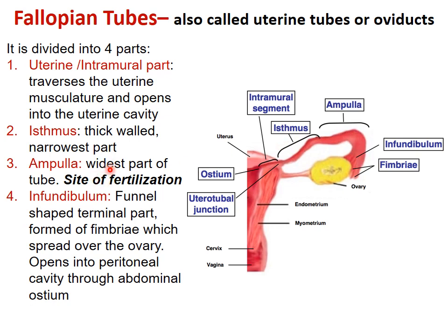The infundibulum is funnel-shaped — the last part is conical with one broad end whose margin consists of finger-like projections called fimbria, which spread over the ovaries and capture the ovum. It tapers down to open continuously as the ampullary part. The infundibulum opens into the peritoneal cavity through the abdominal ostium, making the uterine cavity continuous through the fallopian tube into the abdominal cavity.